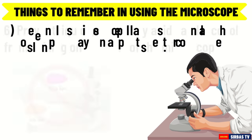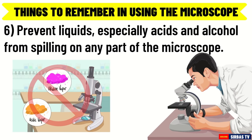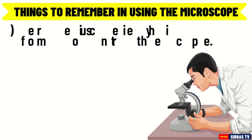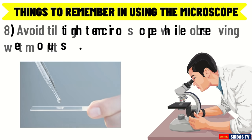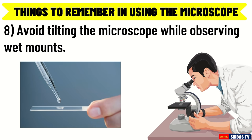Do not touch the glass parts of the lenses with your fingers. Number 6: Prevent liquids, especially acids and alcohol, from spilling on any part of the microscope. Always use a coverslip when observing wet mounts. Number 7: Check for moisture such as from condensation of human breath in the eyepiece. This may happen due to prolonged observation of specimens. Wipe with lens paper.